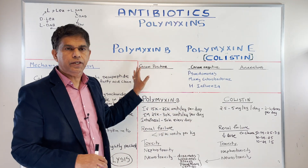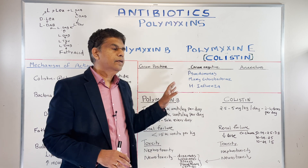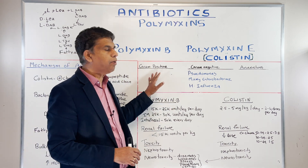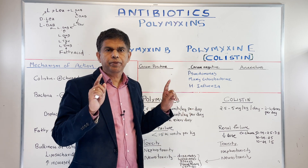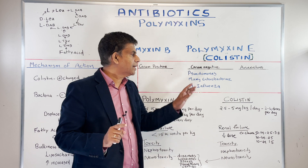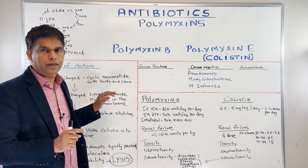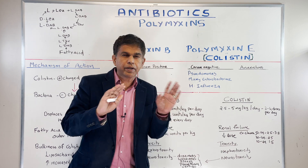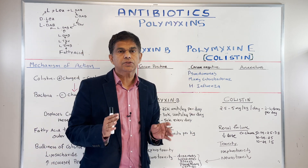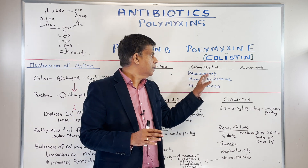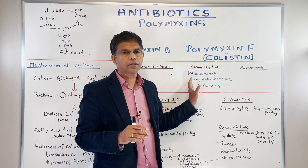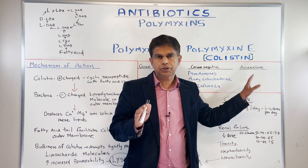Let's look at the coverage. Gram positive? No coverage. Why? Because gram positive does not have lipopolysaccharide in the outer membrane. As we discussed in our first lecture, gram negative is the one that has lipopolysaccharide in the outer membrane. So gram negative has excellent coverage — especially problem-causing bacteria like pseudomonas, many Enterobacteriaceae, especially E. coli, Klebsiella, and H. influenzae. This provides good coverage for all of these. There is no coverage for anaerobes.